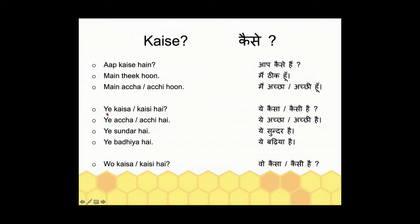The second type of question: 'ye kaisa hai?' — 'kaisa' is for masculine and 'kaisi' is for feminine. This brings up an important point: in Hindi there is no neuter gender. Every object has a gender — every word for every object is either masculine or feminine. If an object is masculine you say 'kaisa'; if an object is feminine you say 'kaisi.'